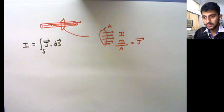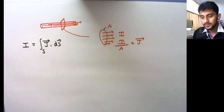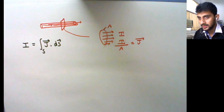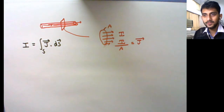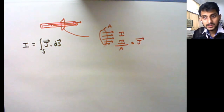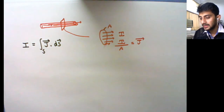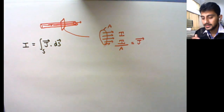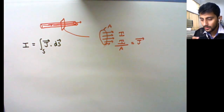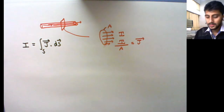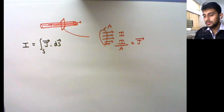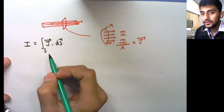If you are going to derive Maxwell's third and fourth equations, remember one thing: in the third equation you will deal with magnetic flux density, and in the fourth equation you will deal with current density.